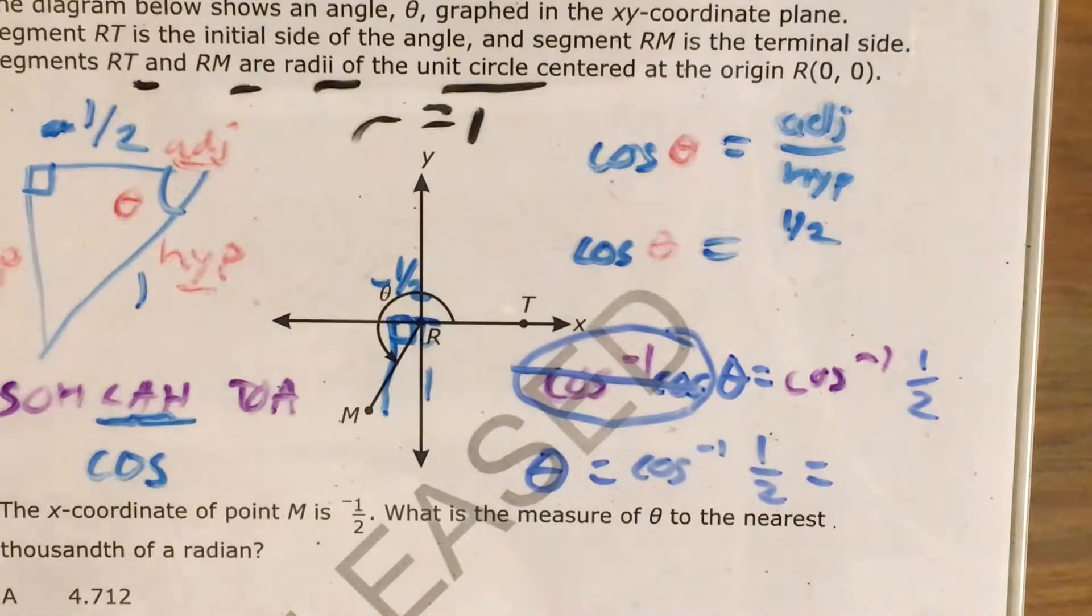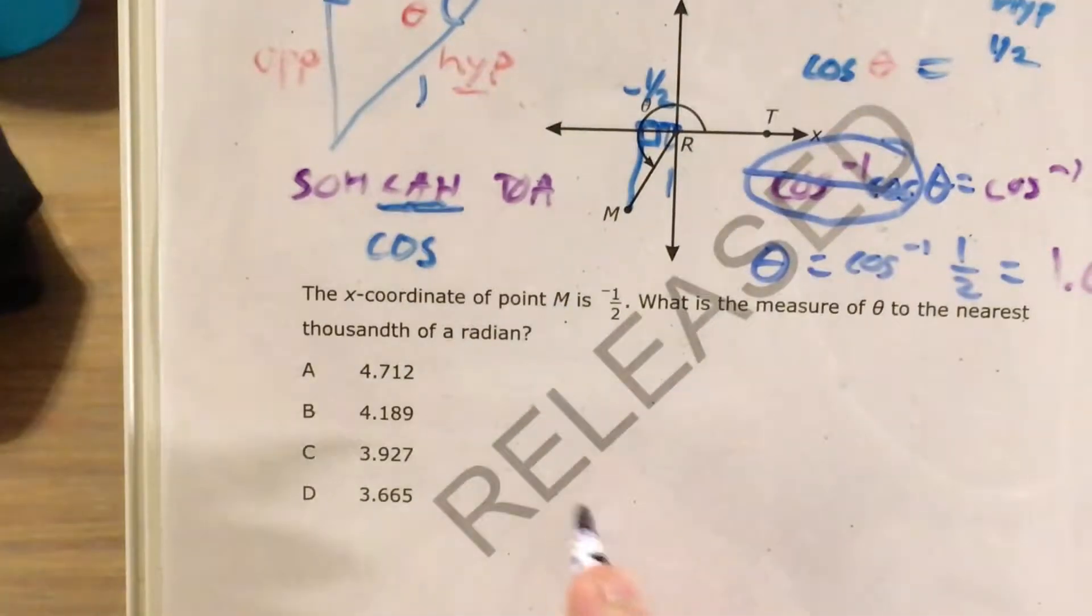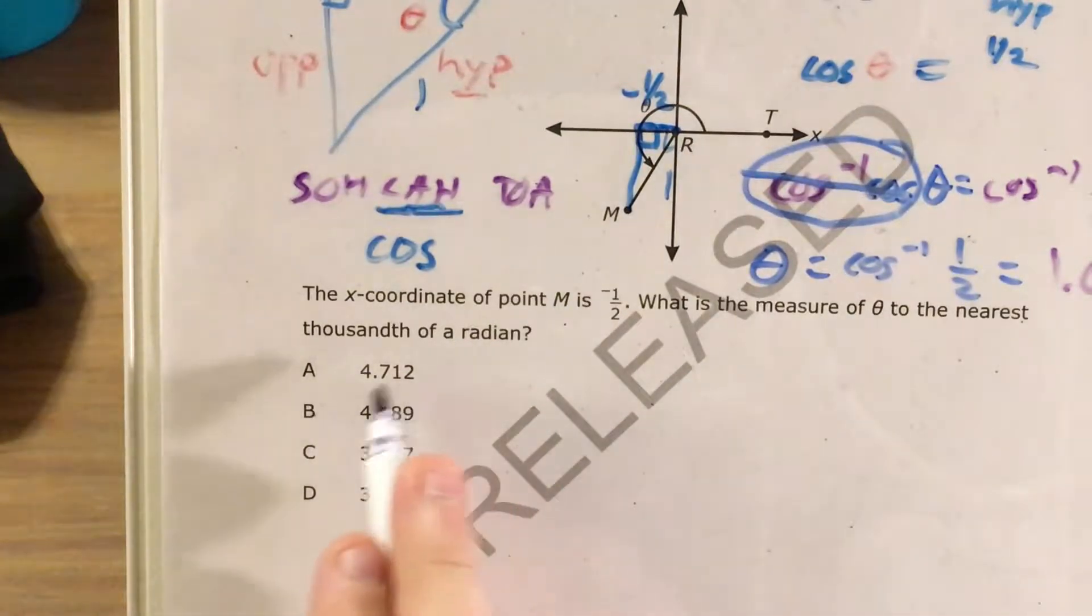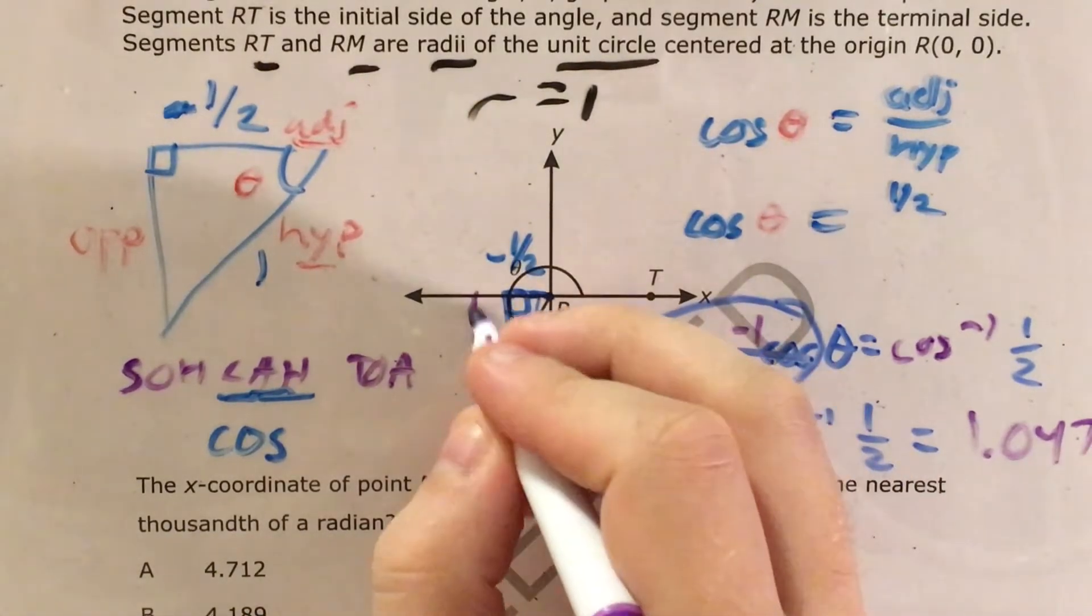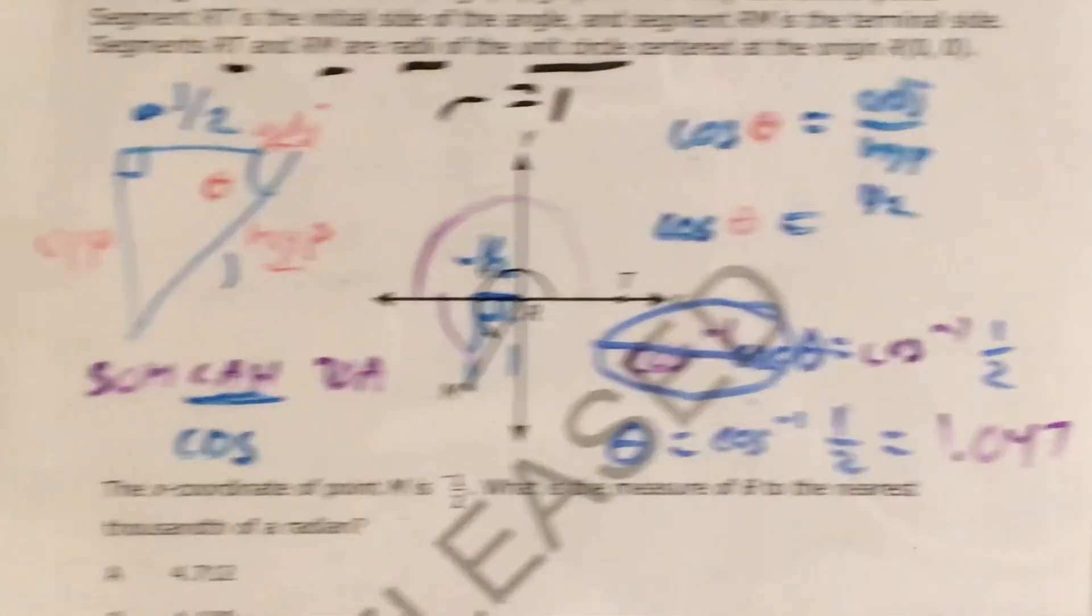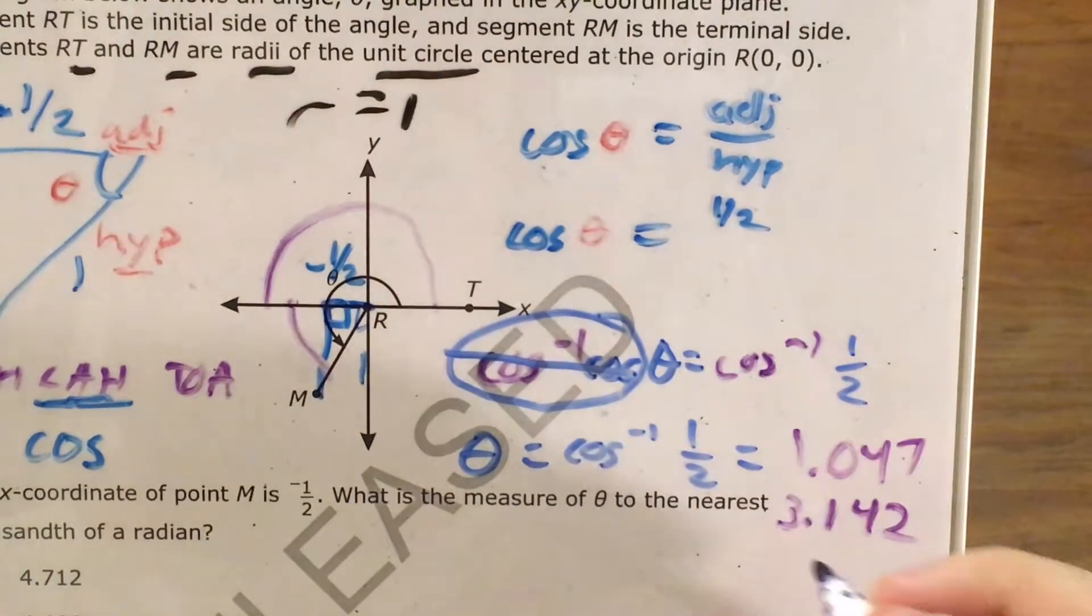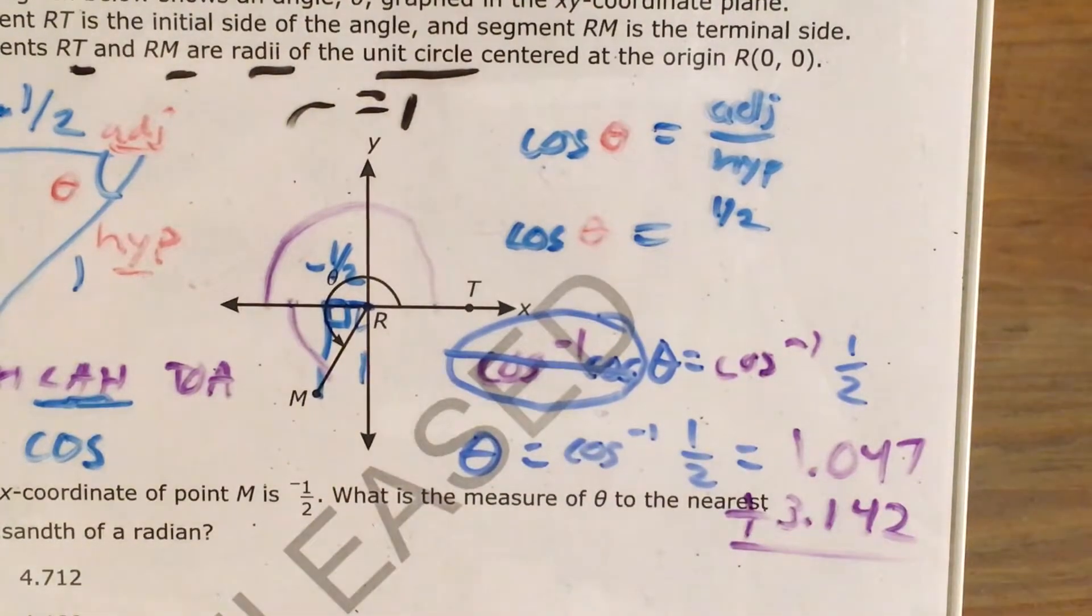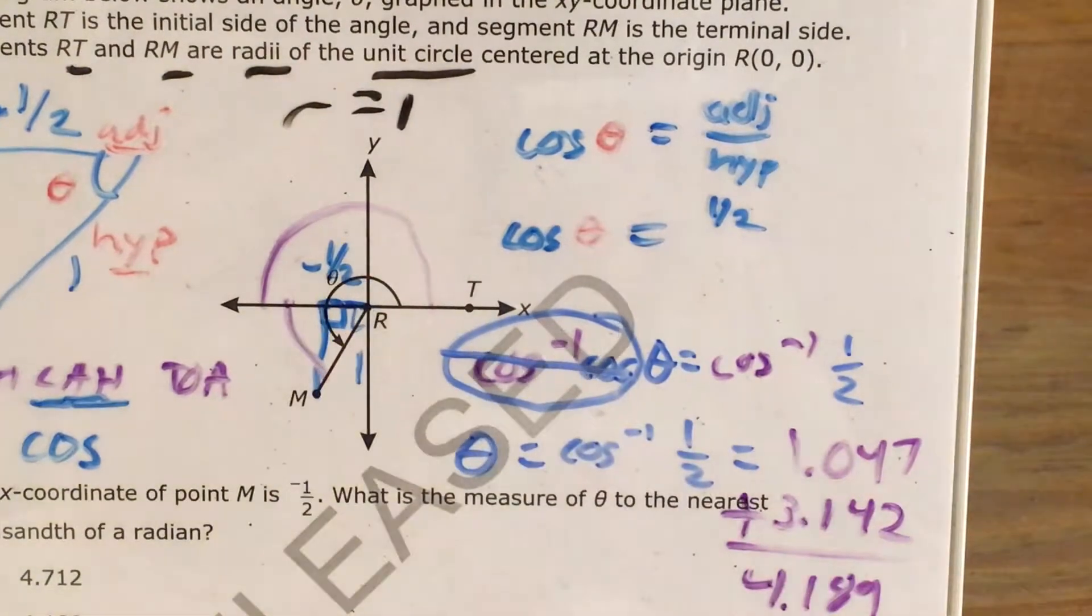Thank goodness we are almost done. Because none of these answer choices match this. And that's when I have to go back to this diagram and remember that I just found the radian measure of this angle, and I also need to find the radian measure of this half a circle. Now, if you remember, the entire circle is 2 pi. So half the circle would just be pi radians, also known as 3.142. So if I add these together, I should get 4.189 radians.